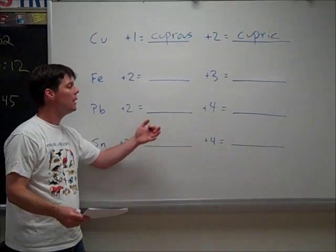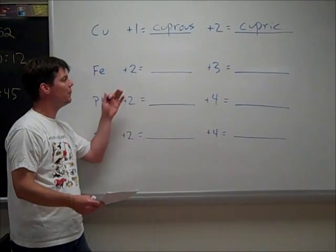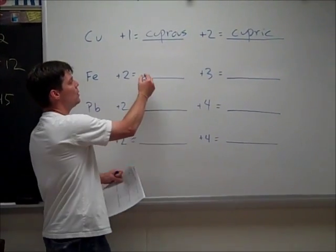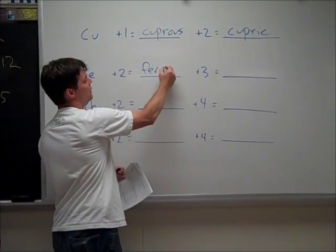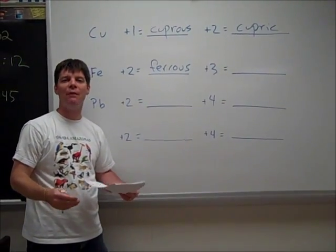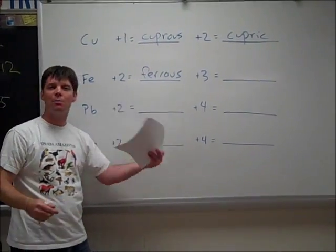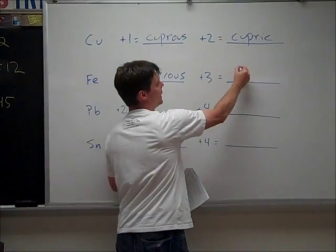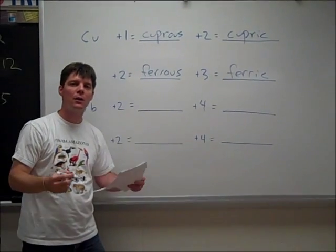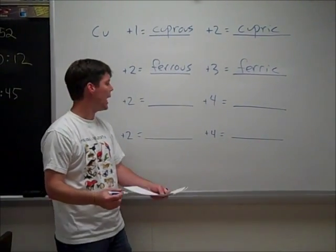Now I can do this with the other elements that are part of this Latin naming system. So the iron plus two ion would be ferrous. Ferrous chloride would be FeCl2. If I have the plus three ion, that's ferric. So ferric chloride is the same thing as iron three chloride.